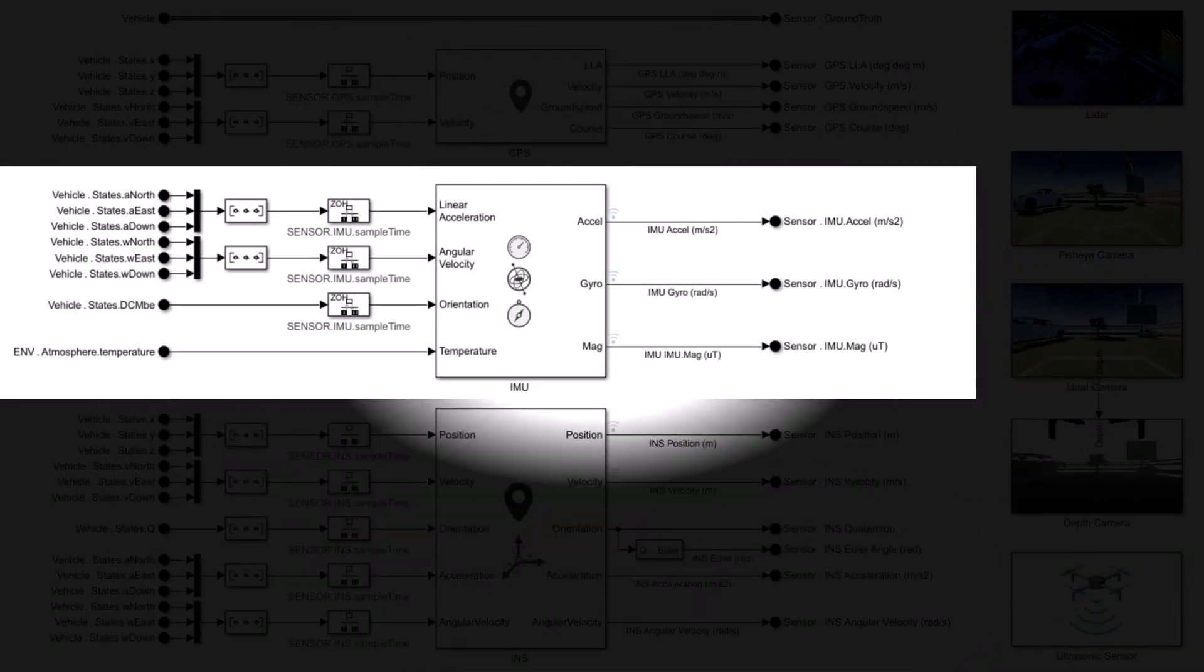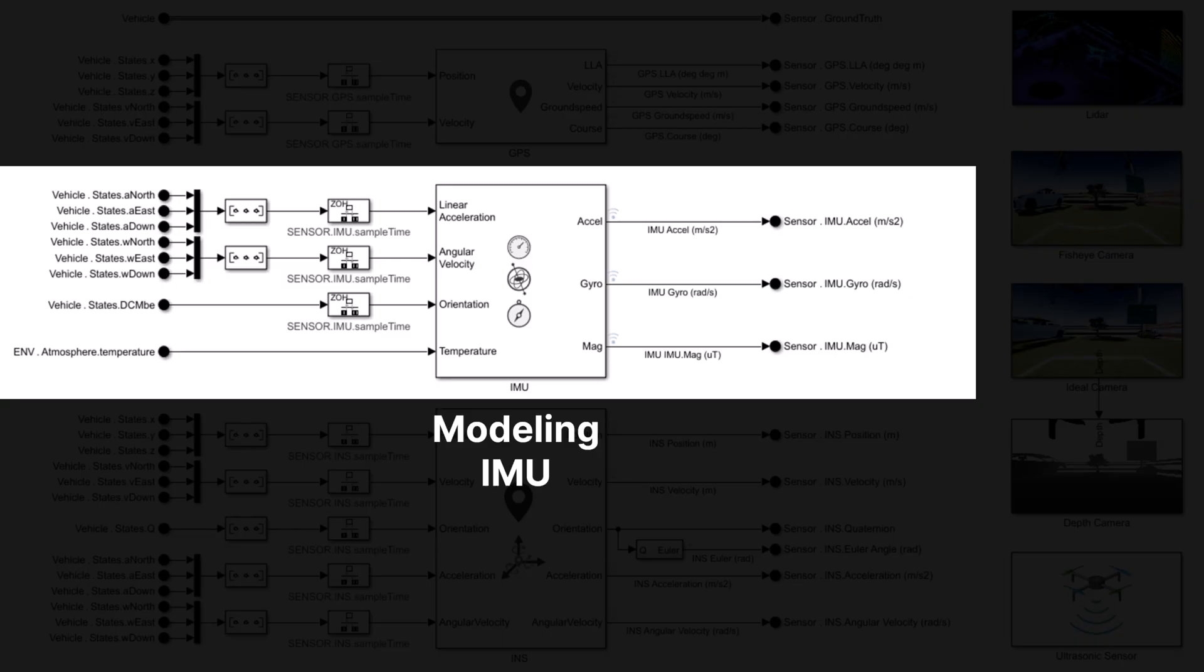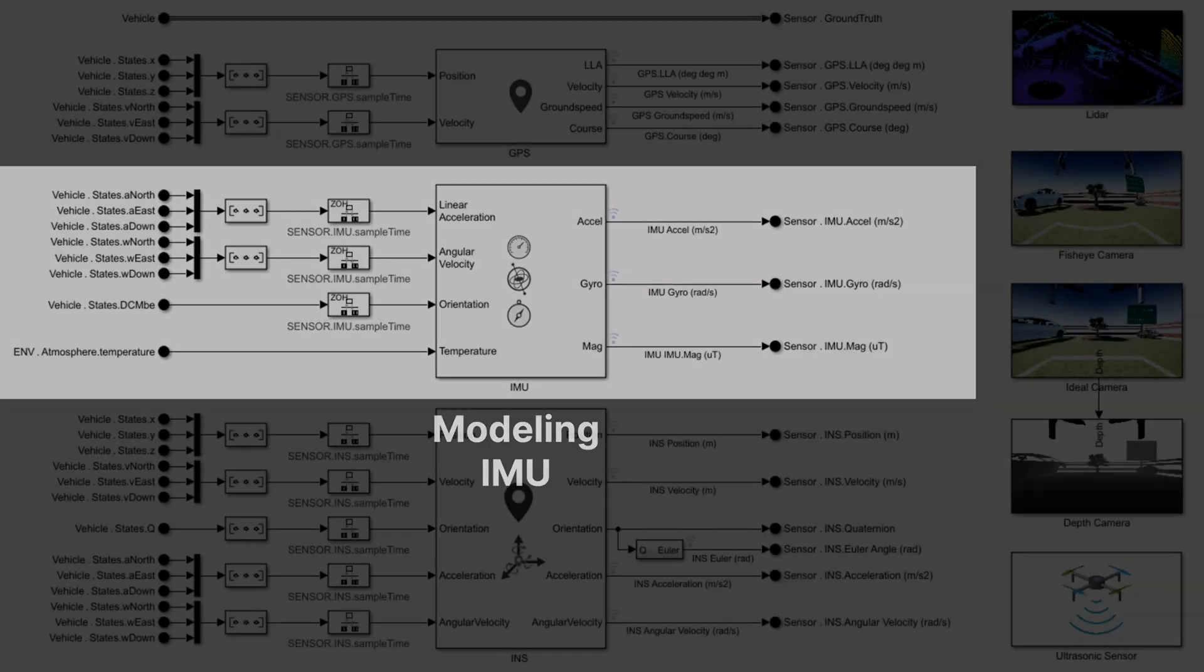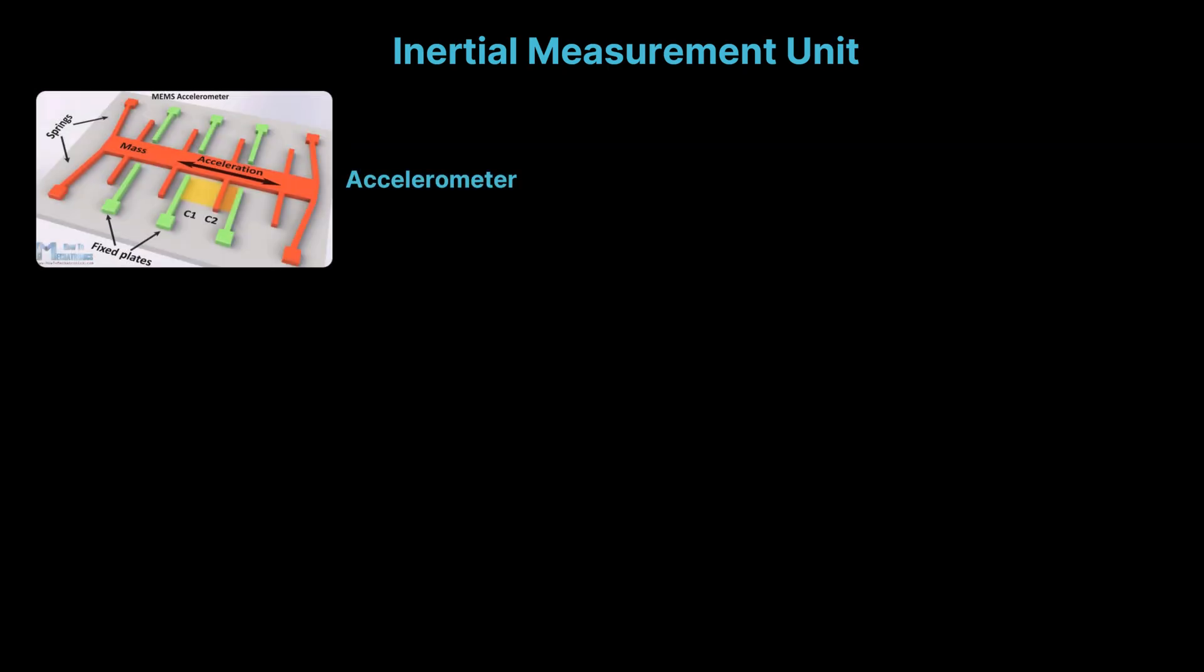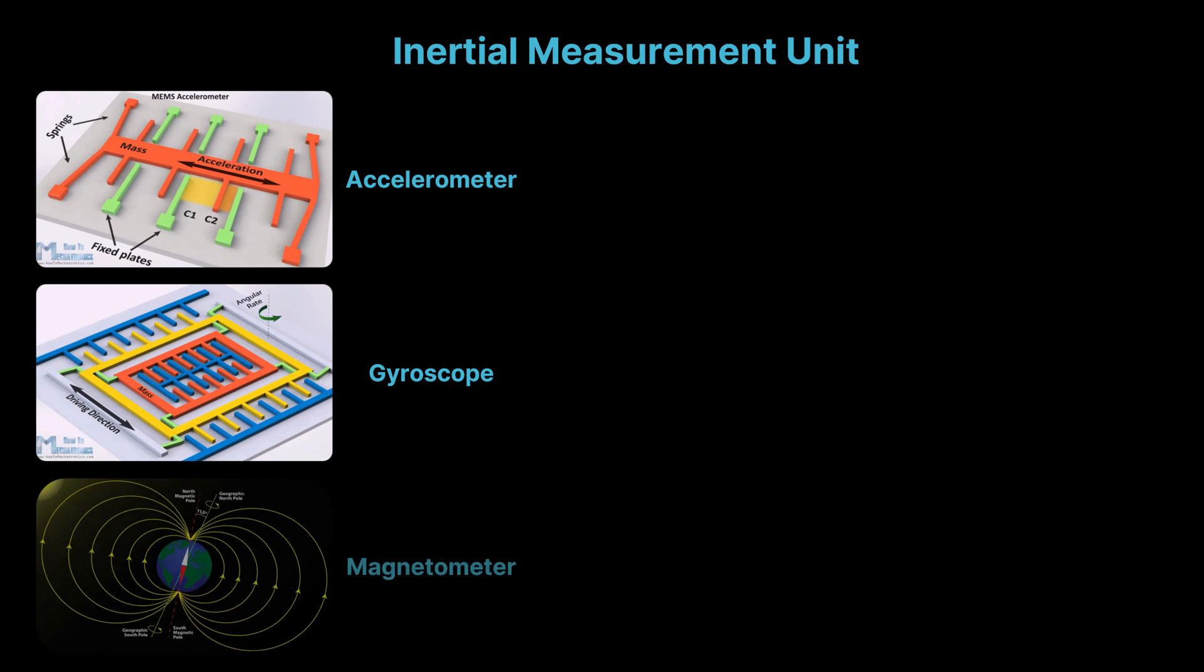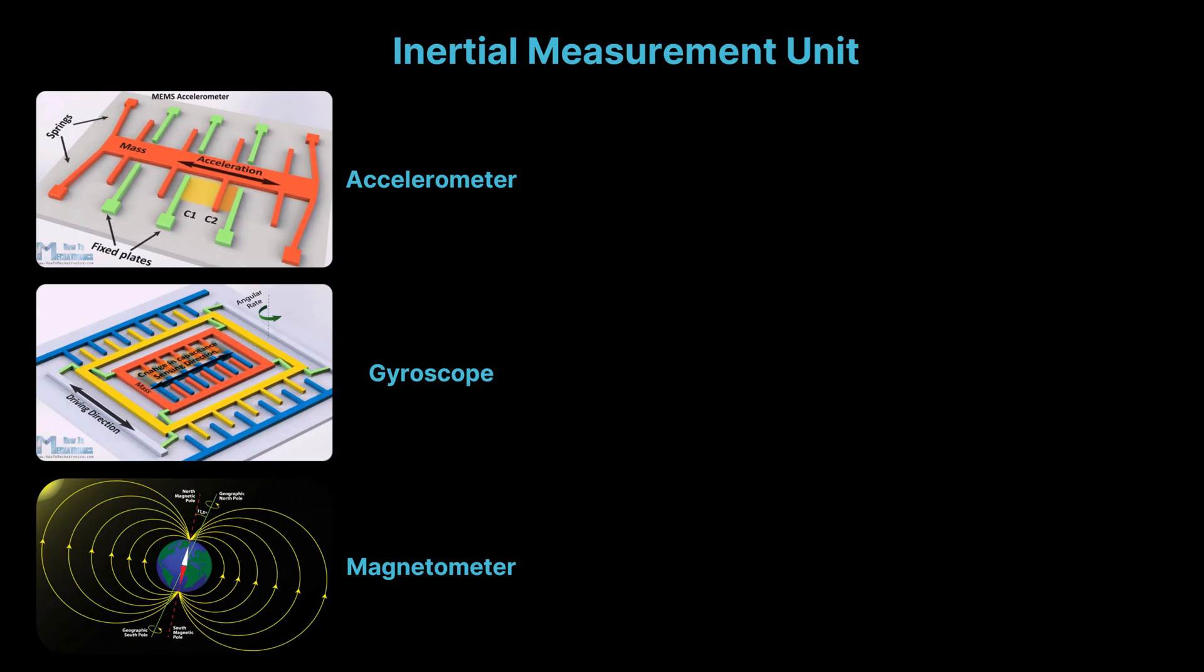Next, let's move on to modeling the IMU, or Inertial Measurement Unit. The IMU sensor measures a body's specific force, angular rate and sometimes magnetic field. It typically integrates accelerometers, gyroscopes and optionally magnetometers to estimate motion and orientation.